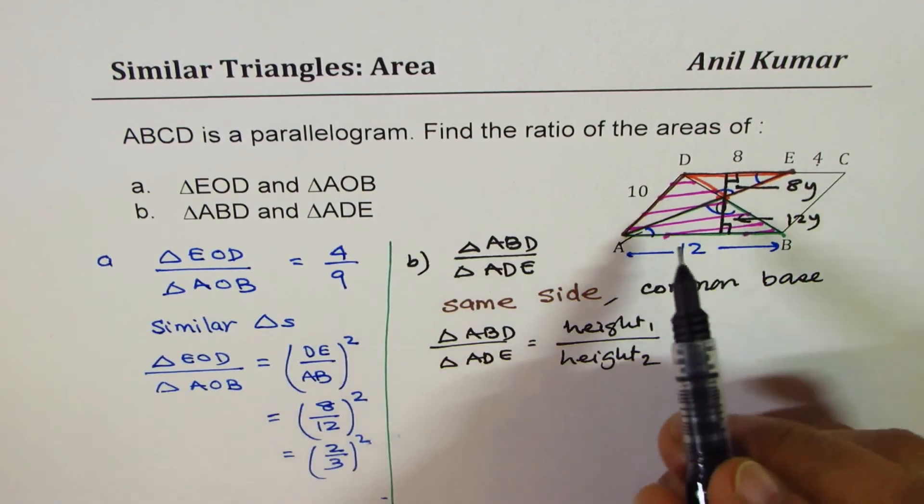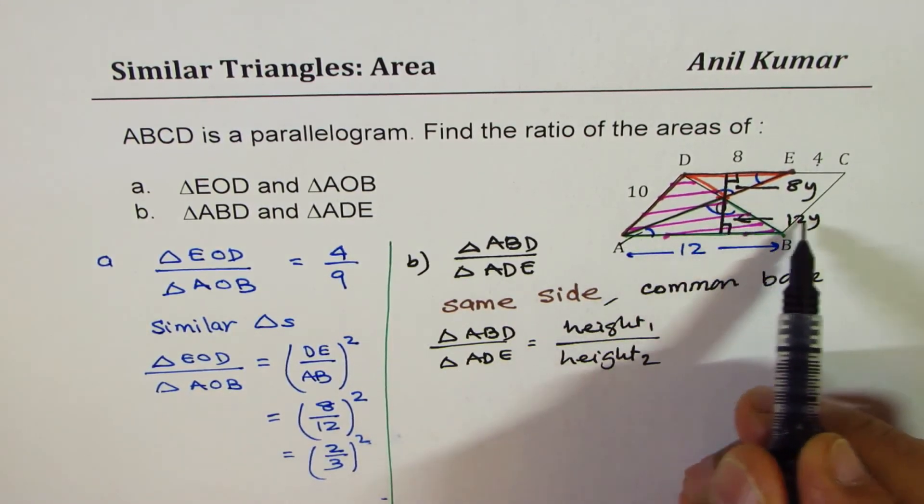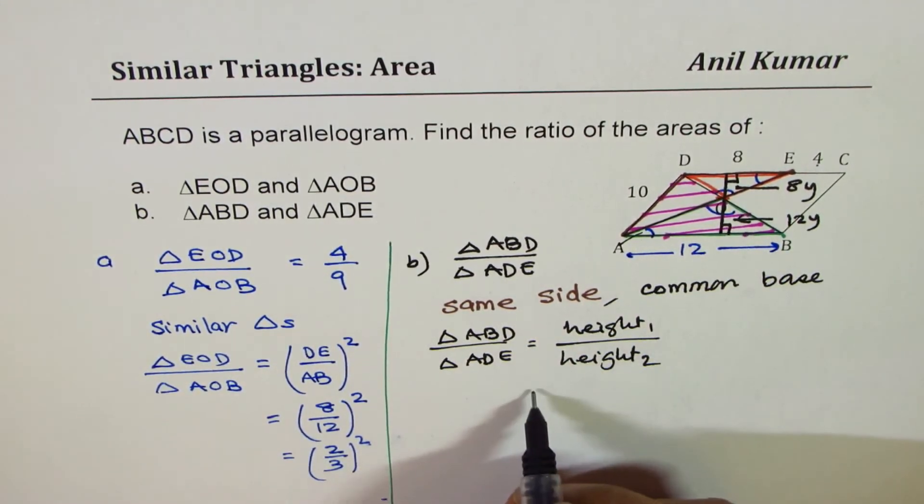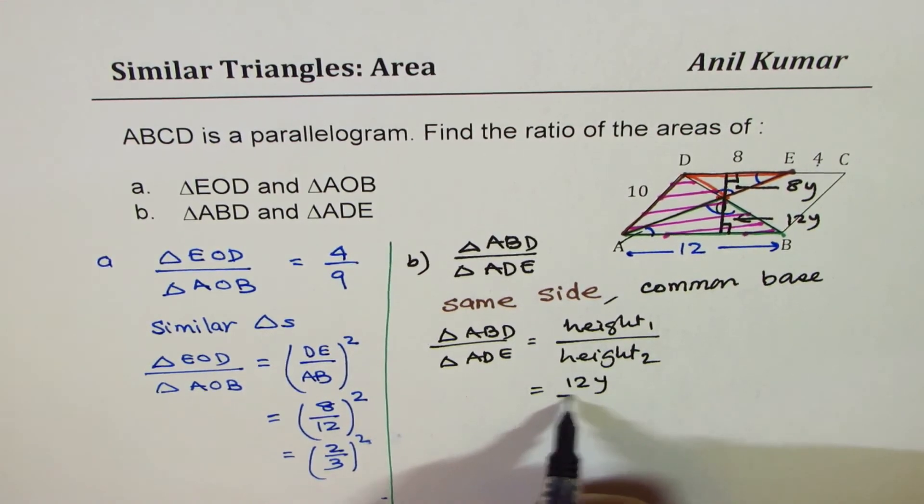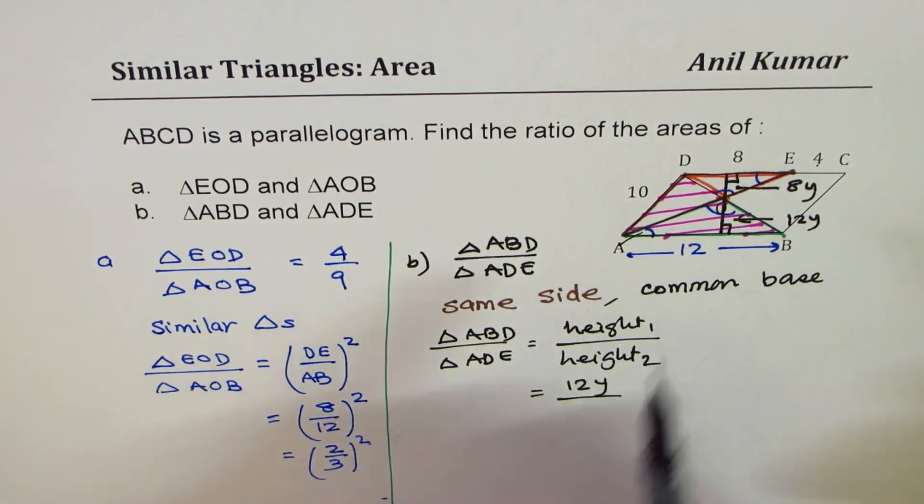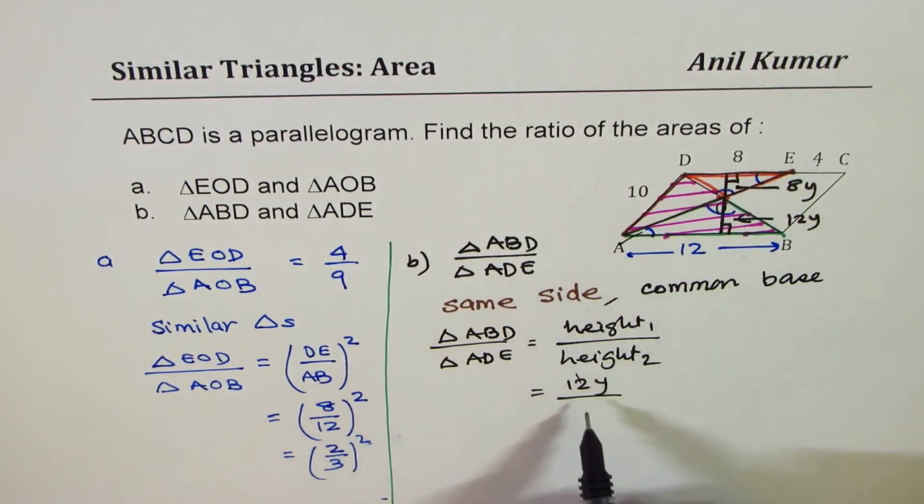So ABD, ABD is 12y, so we could write this as 12y over ADE, the height is smaller, 8y.